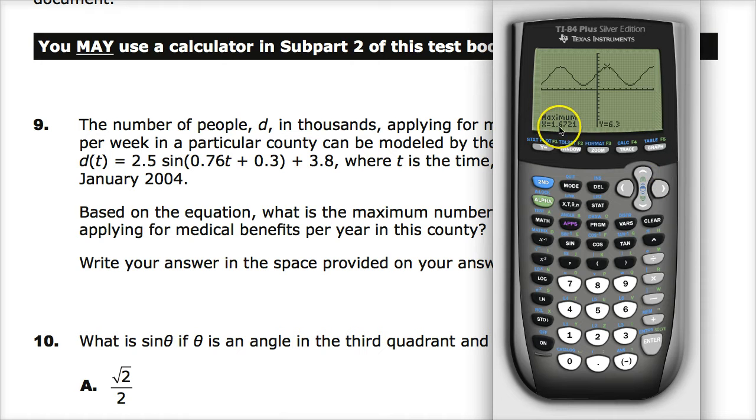And as you can see, I get x value of 1.6721 and a y value of 6.3. A maximum value is always the y. Specifically, in this case, the d, so t is your input value. That's time in years, so that's what's going on this way. This is like saying 1.6721 years after, and then it'll happen again later on. But the d part would be people in thousands. That value is y, so 6.3. So my final answer for number 9 is 6.3. And you're done. That's all you need to do for that problem.